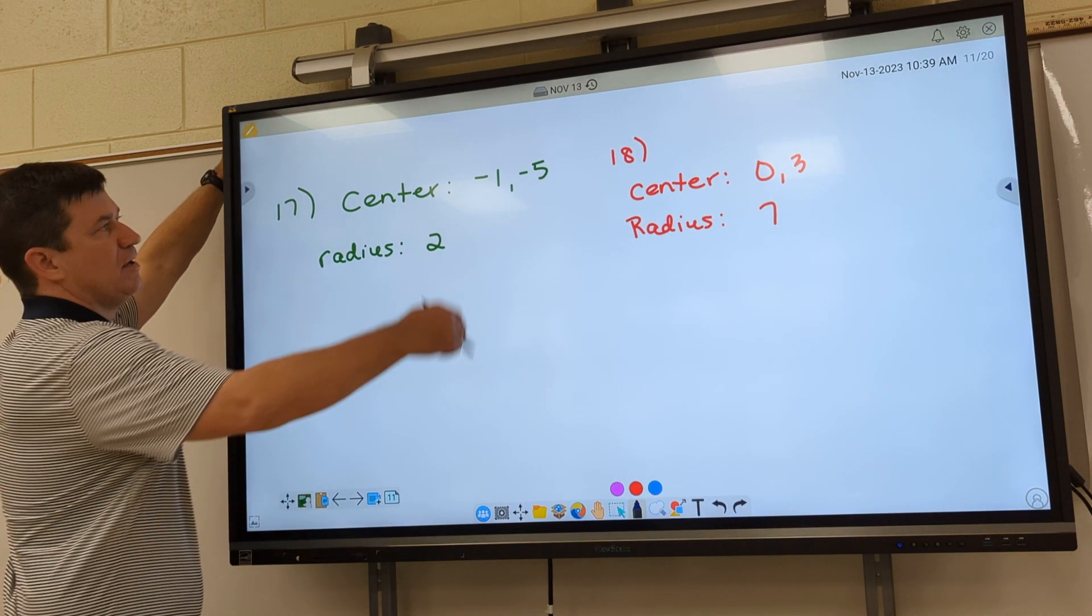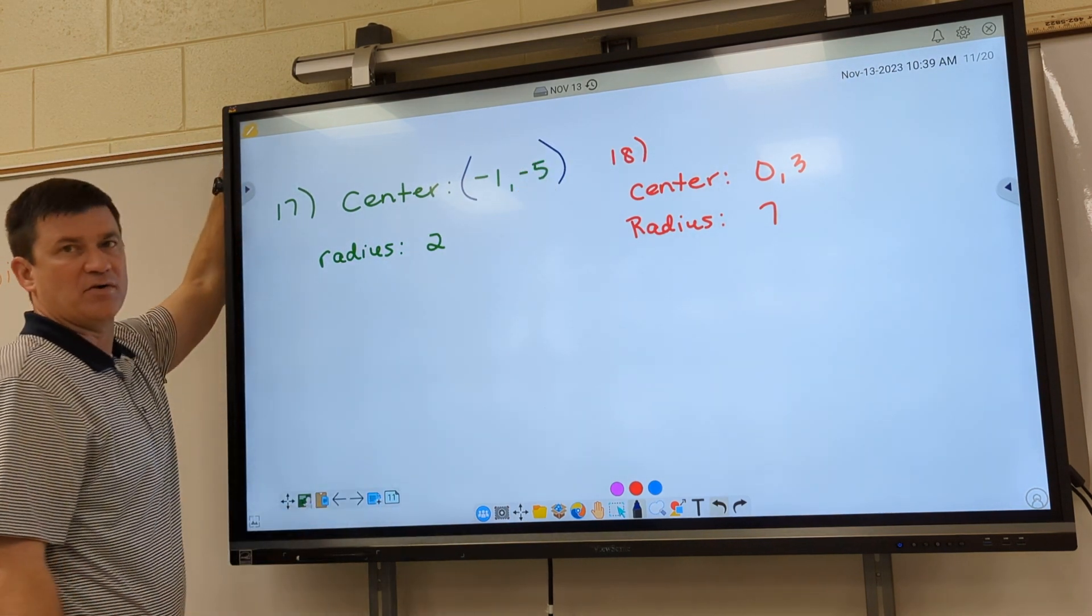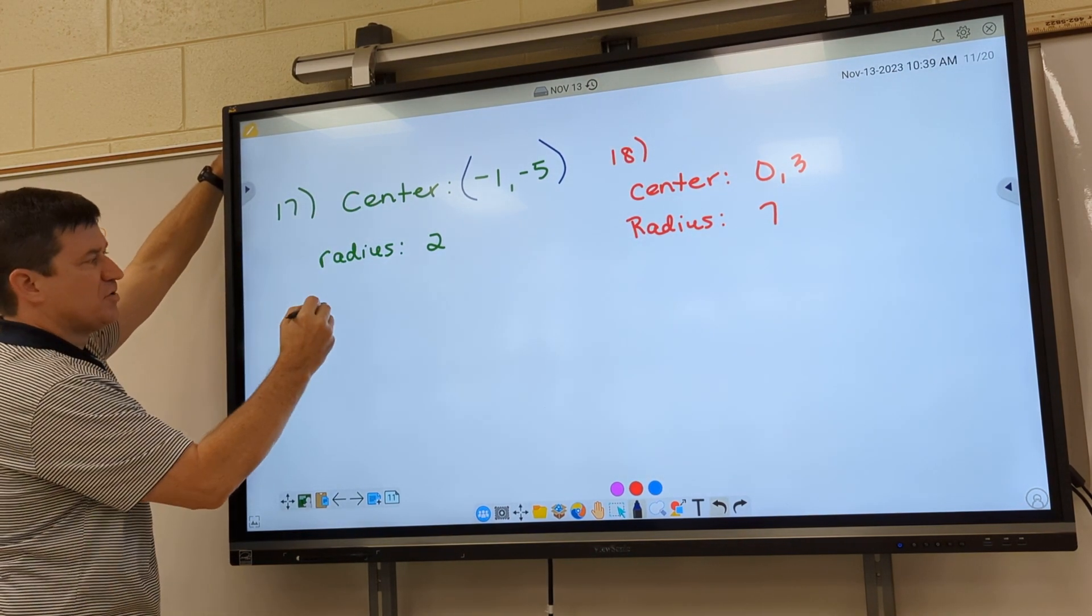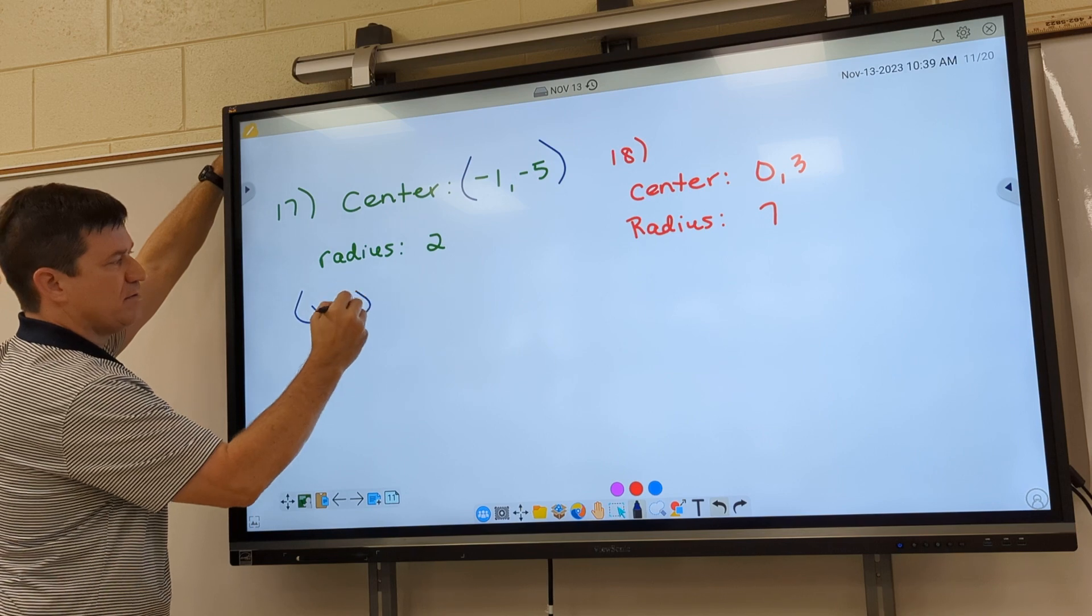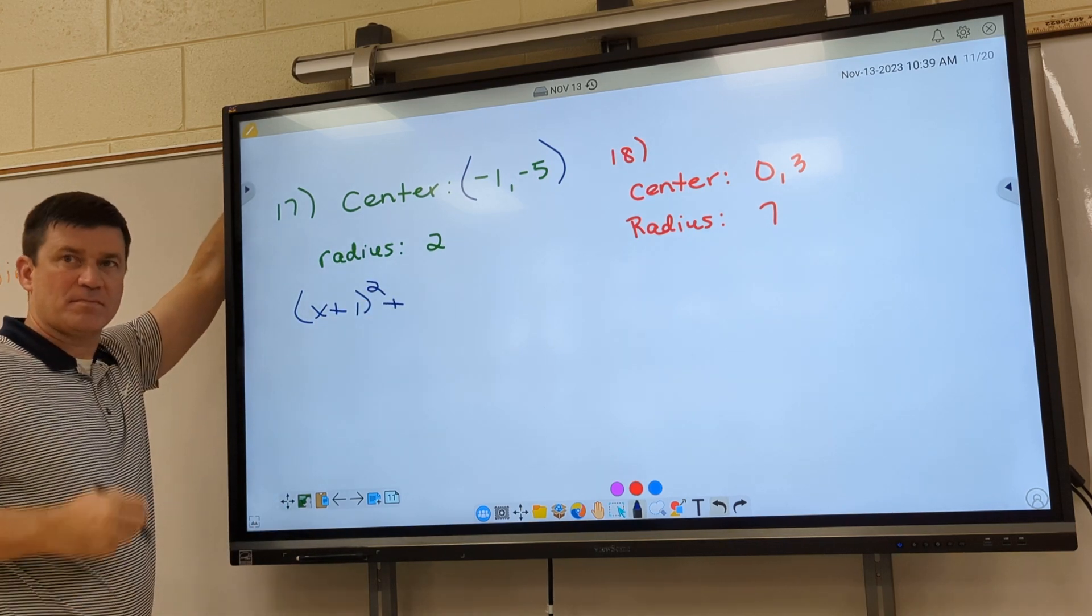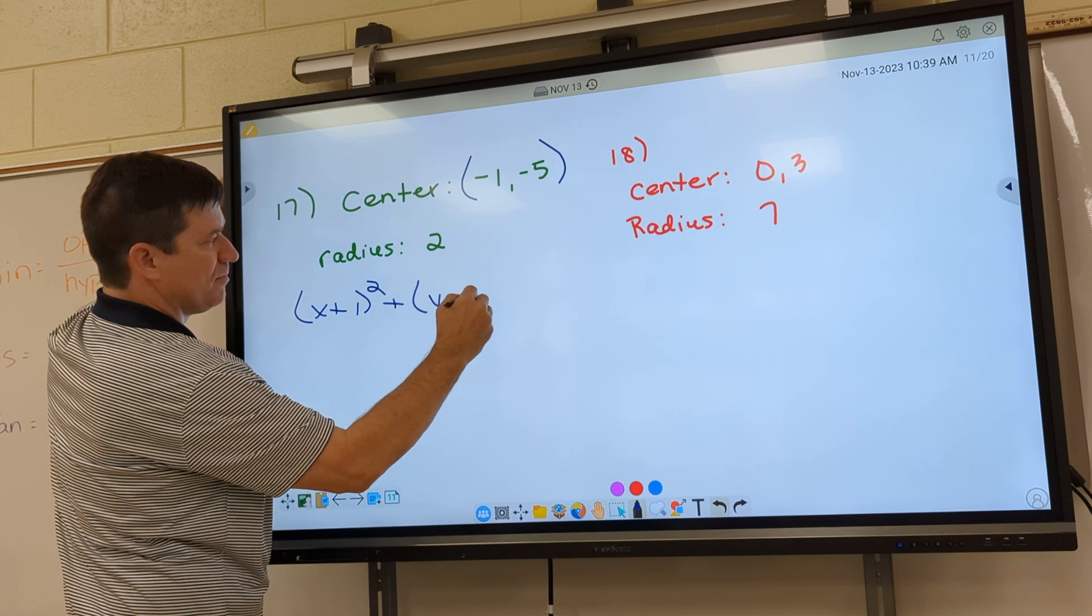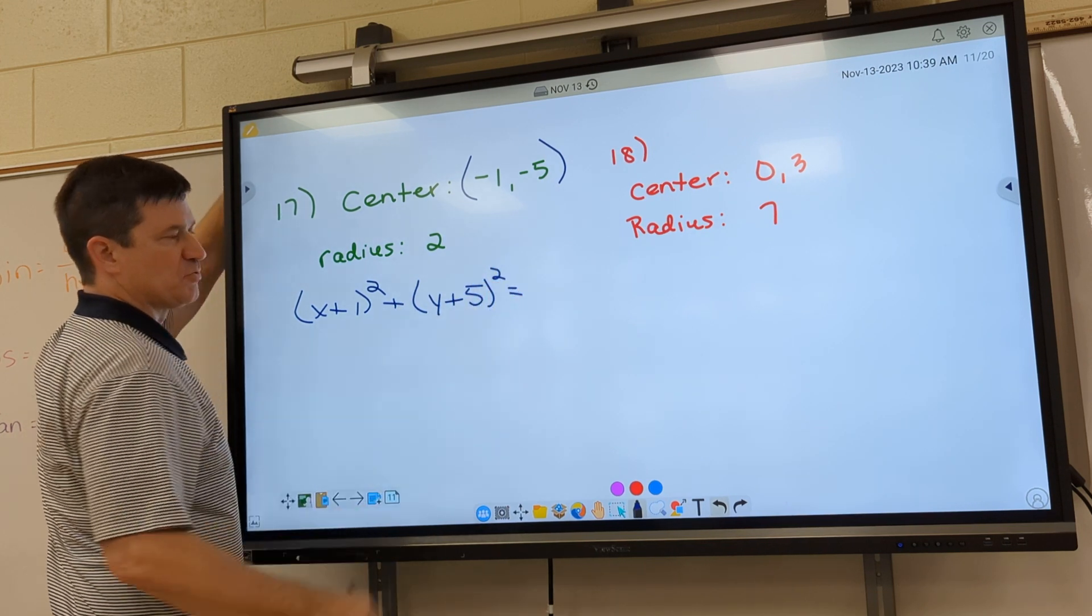Now we're going backwards. So look guys, if they're giving you the center, all you have to do is flip your signs and put them back where you got them from. So it would be x plus 1 squared plus y plus 5 squared, because you've got to flip the sign, equals what, Hunter?